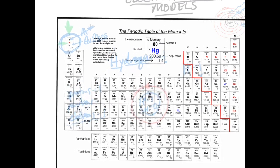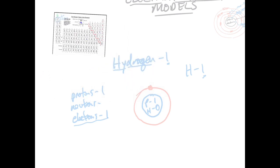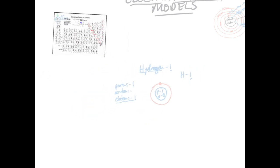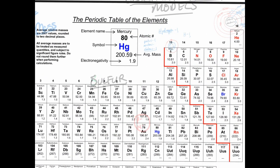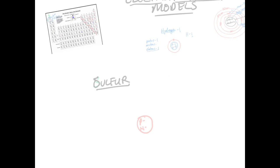Let's draw sulfur. We'll draw a nucleus for sulfur with protons and neutrons. Looking at sulfur on the right side of the periodic table, the atomic number is 16, which tells us we have 16 protons and therefore 16 electrons.